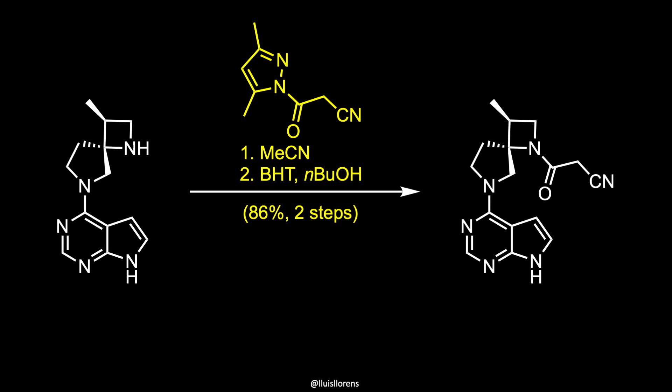Finally, the diamine is acylated with the cyanoacetylpyrazole and subsequently recrystallized from n-butanol in the presence of BHT to give dalgocitinib in 86% yield, over 99% enantiomeric excess, and over 99% diastereomeric ratio.